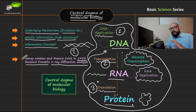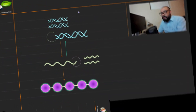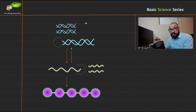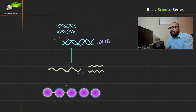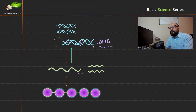Now I'm going to show you another illustration where I have designed the molecules to make the central dogma clearer. Here you can clearly see I have designed the DNA molecule, which has those base pairs interlinked together — adenine, guanine, cytosine, and thymine. This molecule stores the genetic information.